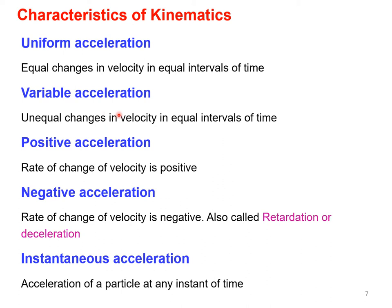Acceleration can also be classified. Uniform acceleration means equal changes in velocity in equal intervals of time. If there are unequal changes in velocity in equal intervals of time, that is variable acceleration or non-uniform acceleration. Based on the rate of change of velocity, acceleration can be positive acceleration or negative acceleration (retardation/deceleration). Similar to instantaneous velocity, we can also measure instantaneous acceleration at any instant of time.